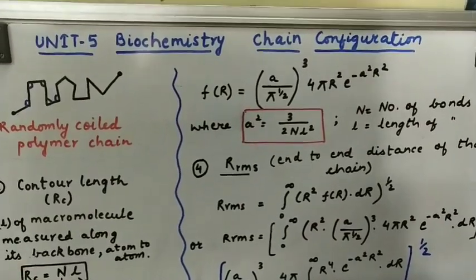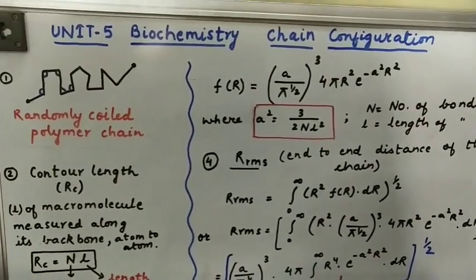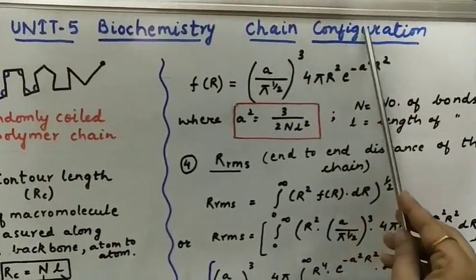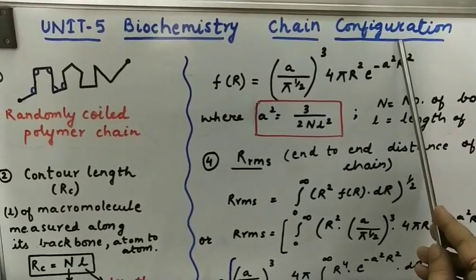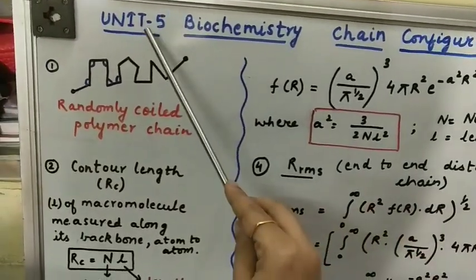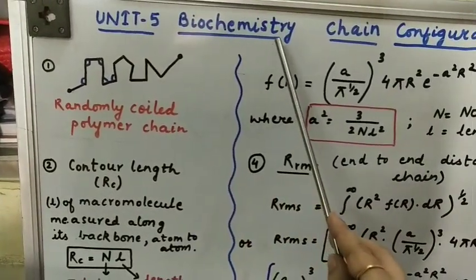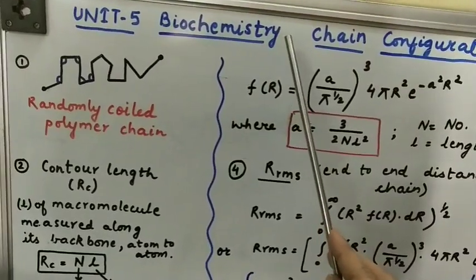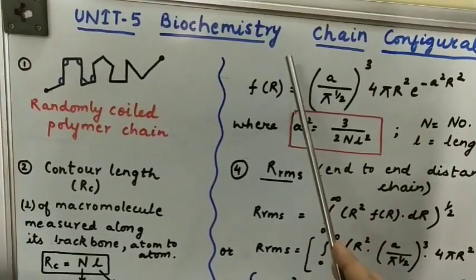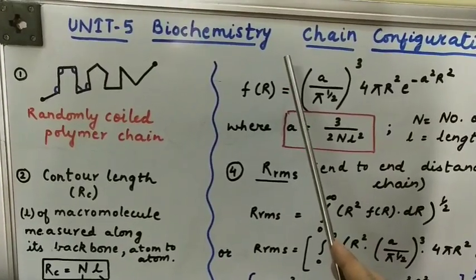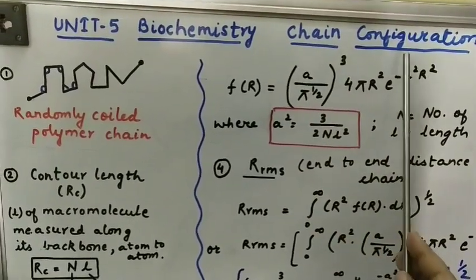So, we will focus mainly upon the chain configuration of macromolecules polymers. This is your unit 5 of biochemistry and this basically includes the part in which we will discuss the polymer chain configuration.